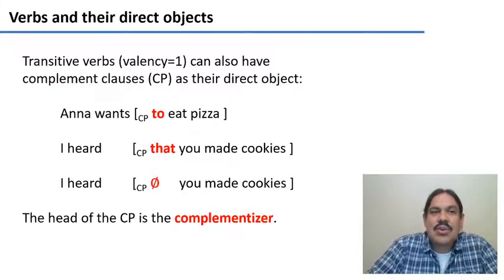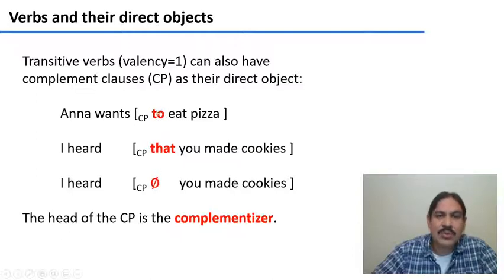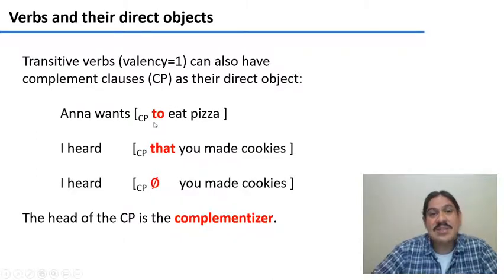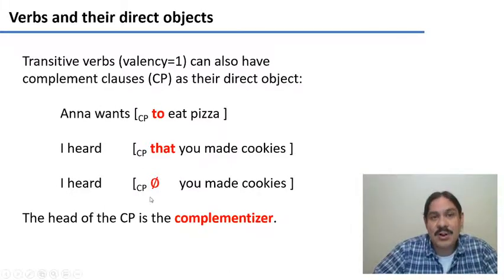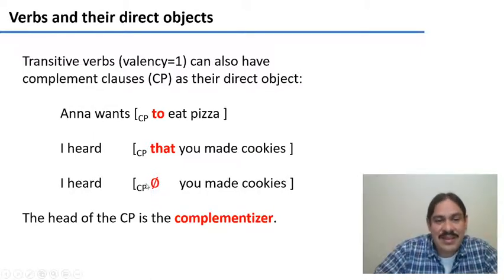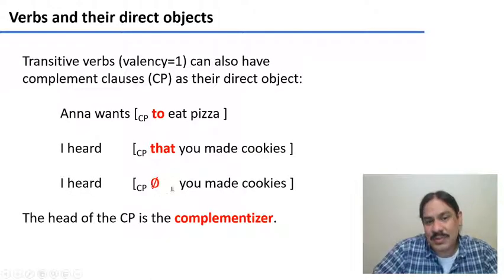We're going to put these in complement clauses, which we're going to call CPs. Each of them is going to have as the head a word that we'll call the complementizer — a word that connects the two sentences, like in 'Anna wants to eat pizza' and 'I heard that you made cookies.' English is special in that it can have zero complementizers, so these are going to be like empty words that are still there, connecting one phrase with the other and living in the head of the complement phrase.